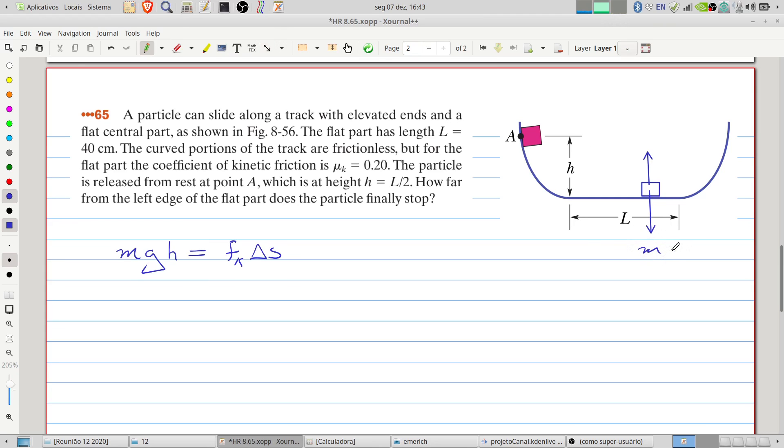So we can equate mg with the normal or the reaction of the surface, the normal force. Therefore this reaction force will be equal to mg, and this implies that the kinetic friction will be the kinetic friction coefficient μk multiplied by mg.